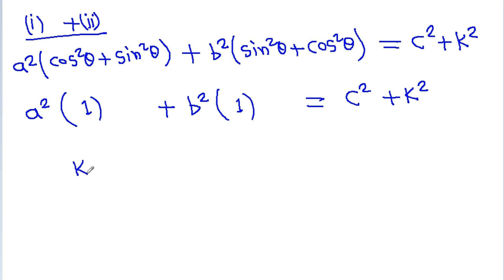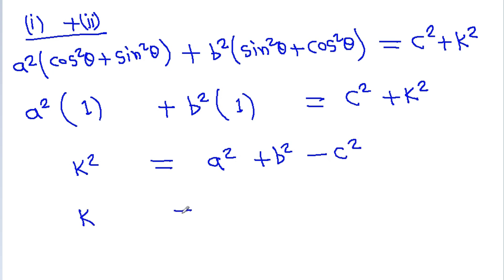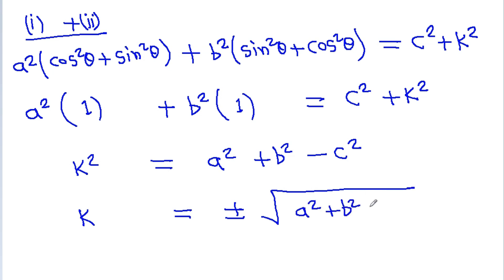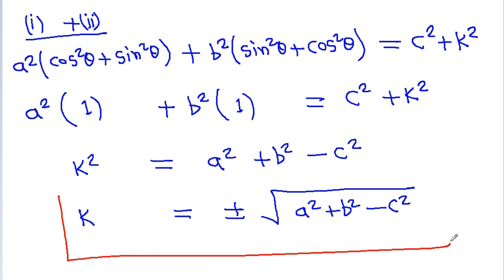And we get k squared is equal to a squared plus b squared minus c squared. Therefore, k is equal to plus or minus root under a squared plus b squared minus c squared. So this is the value of k.